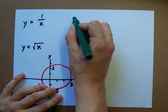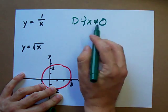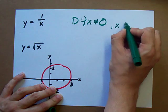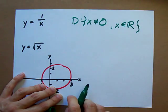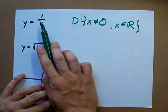We say that the domain here is X cannot be zero. X not equal to zero, but any other real number works. Again, can't be zero because you're not allowed to divide by zero.